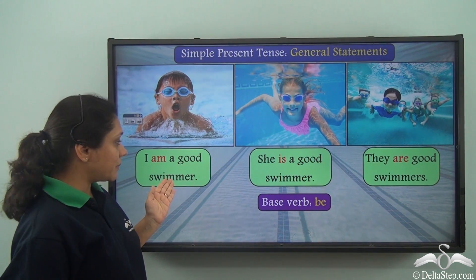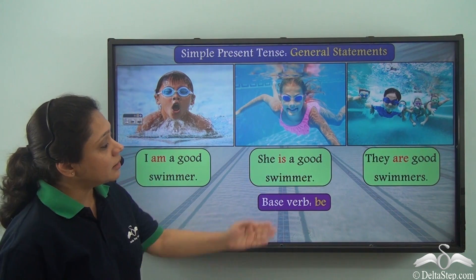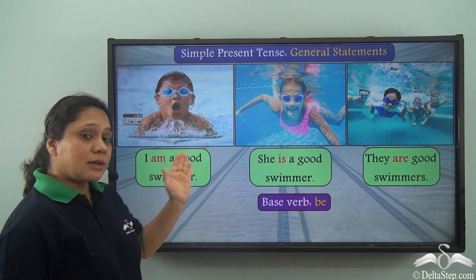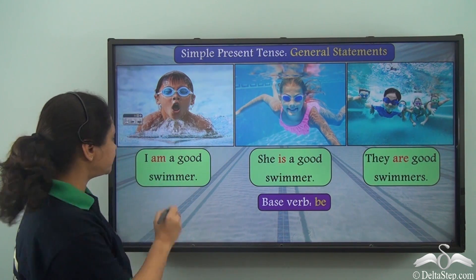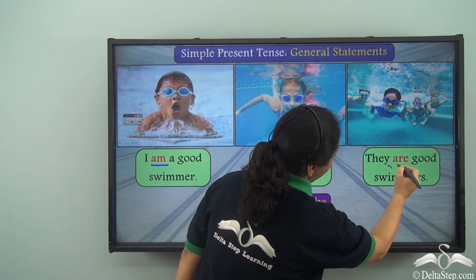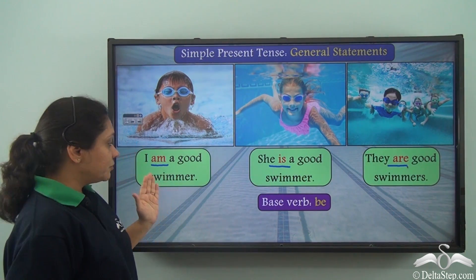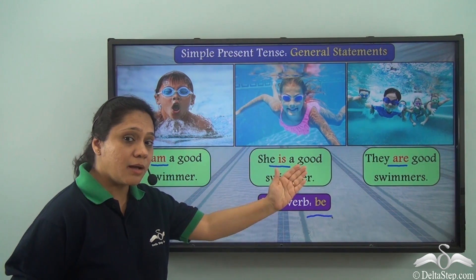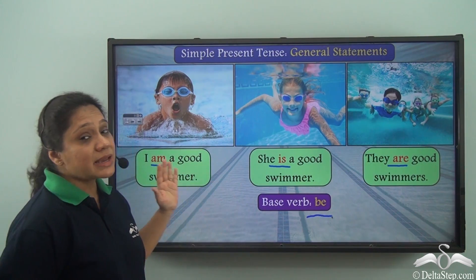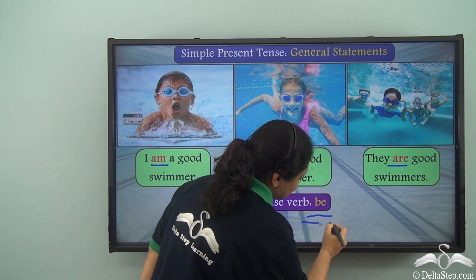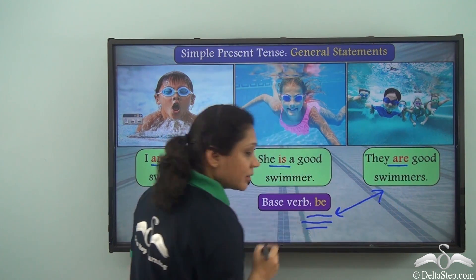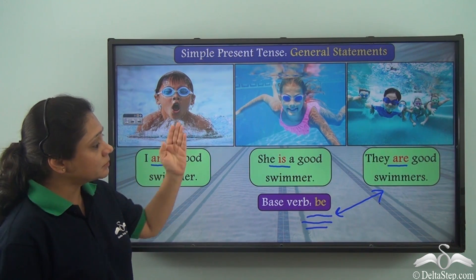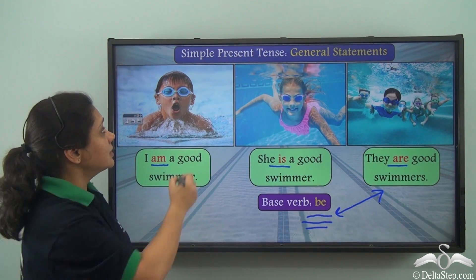I am a good swimmer. She is a good swimmer. They are good swimmers. All three sentences are general statements. The verbs am, is, and are are different forms of the base verb be. This is an exceptional case where the plural form is not the same as the base verb. But all these statements are in the simple present tense — am, is, and are are verbs in the simple present tense.